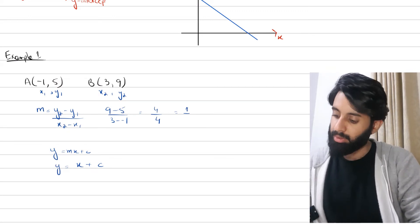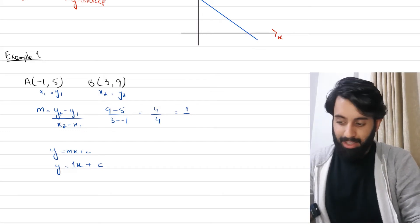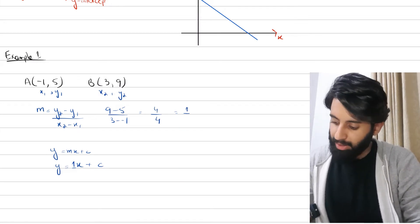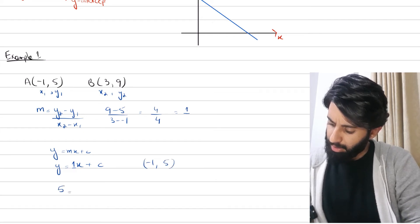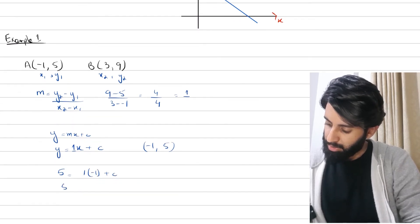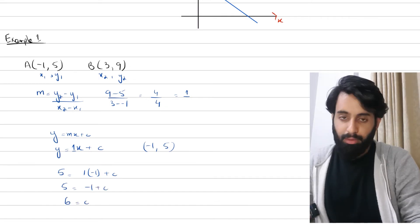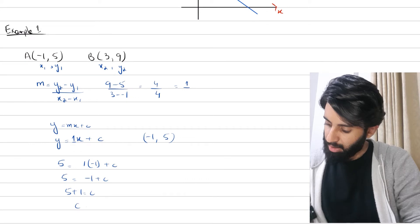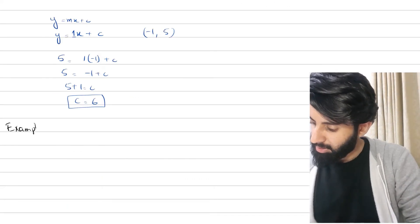The coefficient of x is 1 because that's what the gradient is. Now to find c, you can plug in any one point — A or B. Suppose I plug in A, which is (−1, 5). In place of y I plug in 5 and in place of x I plug in −1: 5 = 1 × (−1) + c, so 5 = −1 + c, which means 5 + 1 = c, so c = 6.